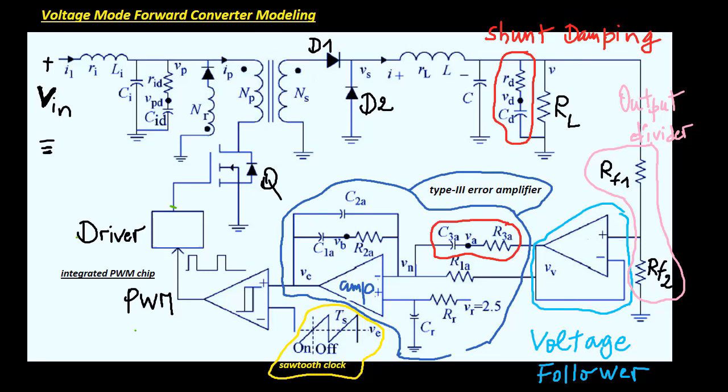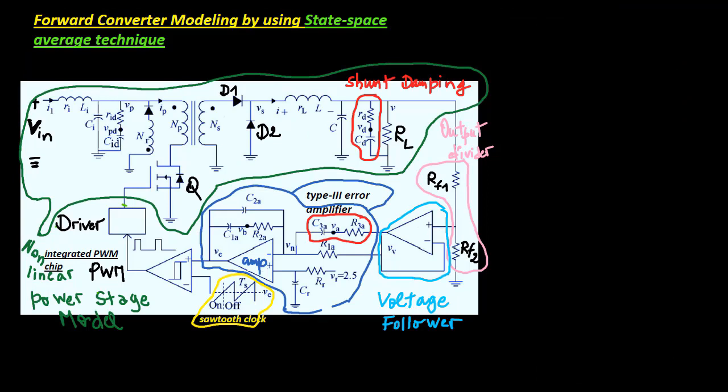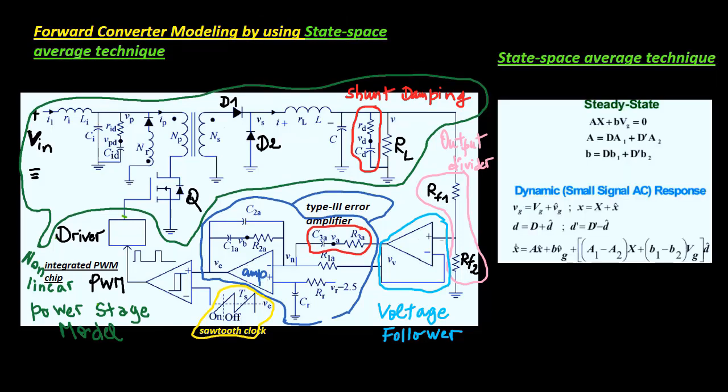To be able to control the forward converter, we should model the power stage and find its transfer function. State space models give a basic and powerful method for the dynamic modeling of numerous systems, such as the power converter. The state space averaging technique gives a complete converter model with steady state and dynamic quantities.